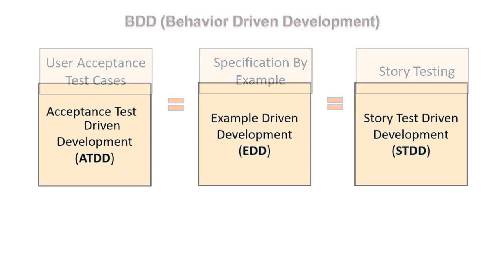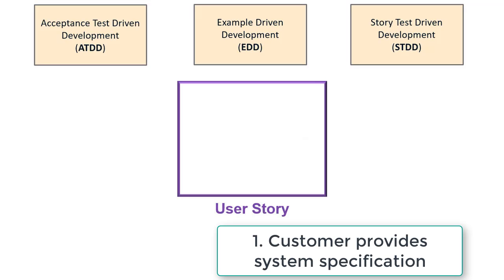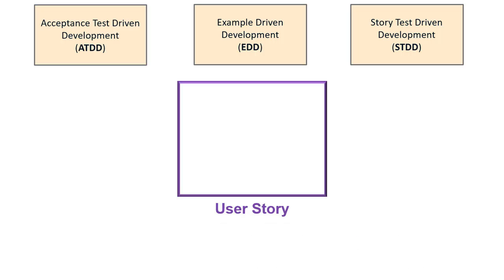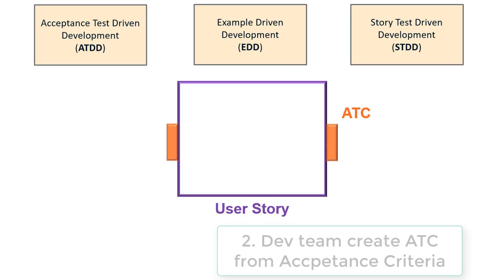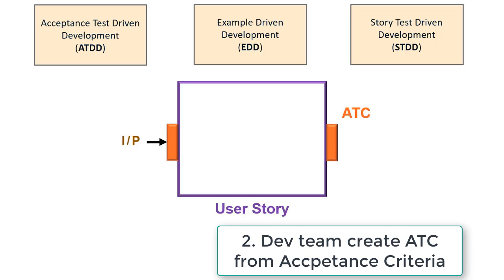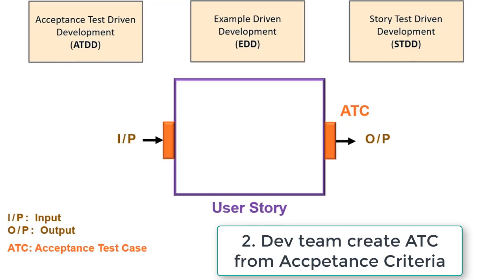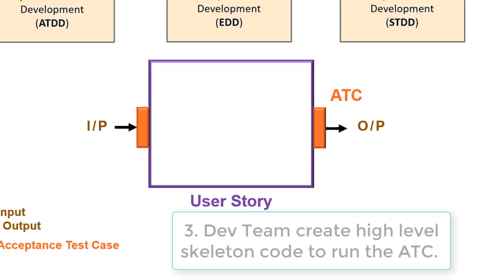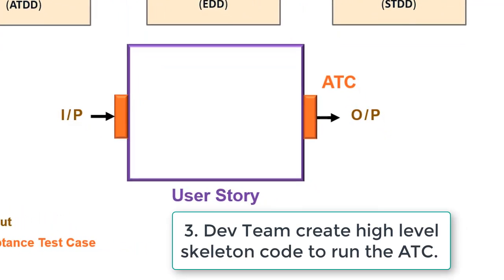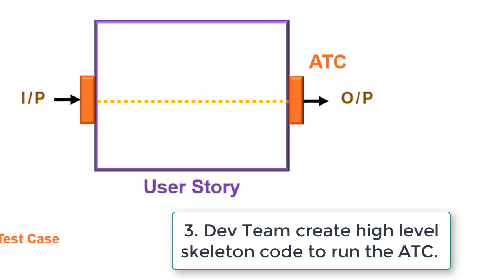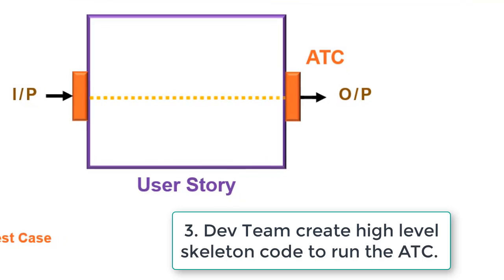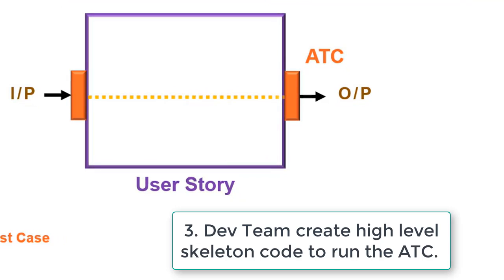Now let me explain the process of execution of behavior-driven development. Step 1: The customer provides the system specifications. Step 2: The dev team creates acceptance test cases from the acceptance criteria. Step 3: The development team creates high-level skeleton code to run the acceptance test cases.